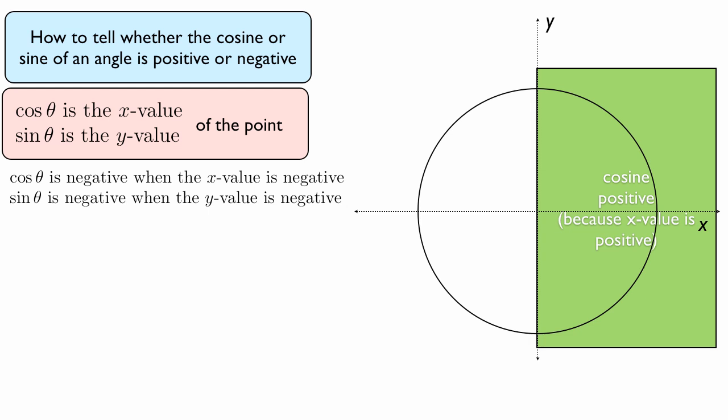In other words, the first and the fourth quadrants. And the reason cosine is positive over there is because the x value is positive in that area. Every point in that green area, you have a positive x value. So every angle will form a point on the unit circle with a positive x value.